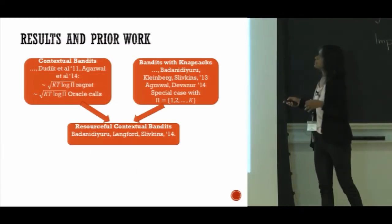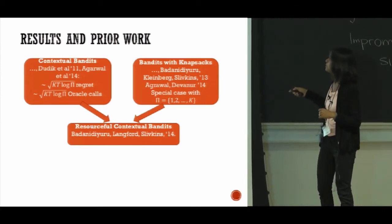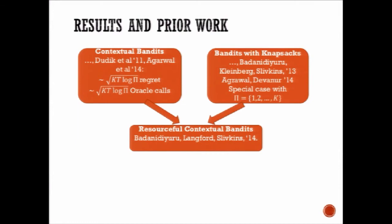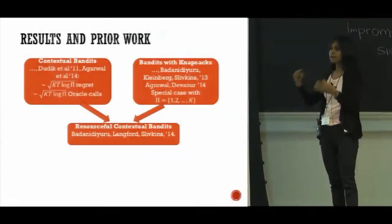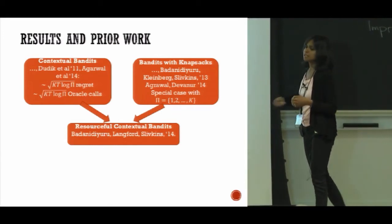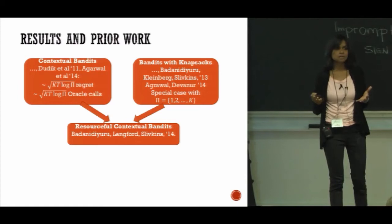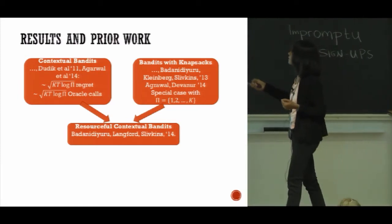Just to describe our contributions, let me briefly say what is the state of the art in these problems. For the contextual bandits problem without any constraints, the state of the art is represented by these papers here. Many of the contributors are present. The paper by Alek Agarwal and co-authors basically gives the best available regret bound for the contextual bandits problem as I described it. They achieve a square root KT log pi regret, and also something that is important in our work: they also achieve this by an efficient algorithm. What I mean by efficient is that the number of oracle calls they have to make is only logarithmic in the policy space. That is important because the policy space could typically be very large.